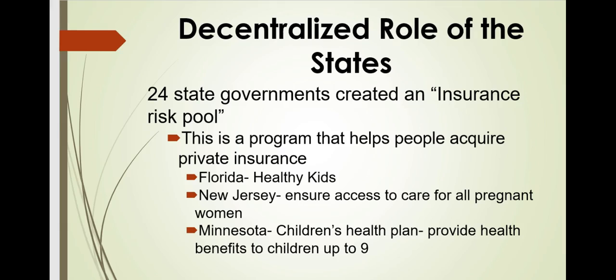Examples of state-initiated programs: New Jersey developed a program to ensure access to care for all pregnant women. Florida set up the Healthy Kids Corporation, which linked health insurance to schools. Washington developed a program for the working poor using HMOs and preferred provider organizations (PPOs) within the state's counties. Maine established MaineCare to offer HMO-based coverage at moderate prices to small businesses with 15 or fewer employees. Minnesota created the Children's Health Plan to provide benefits to children up to 9 years of age in families with incomes below 185% of the federal poverty level who do not qualify for Medicaid.